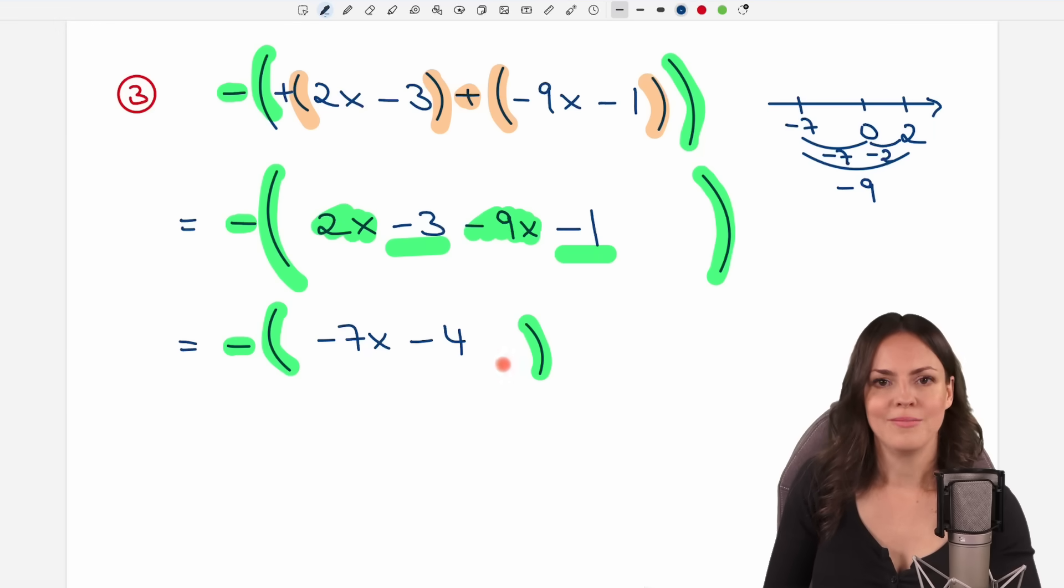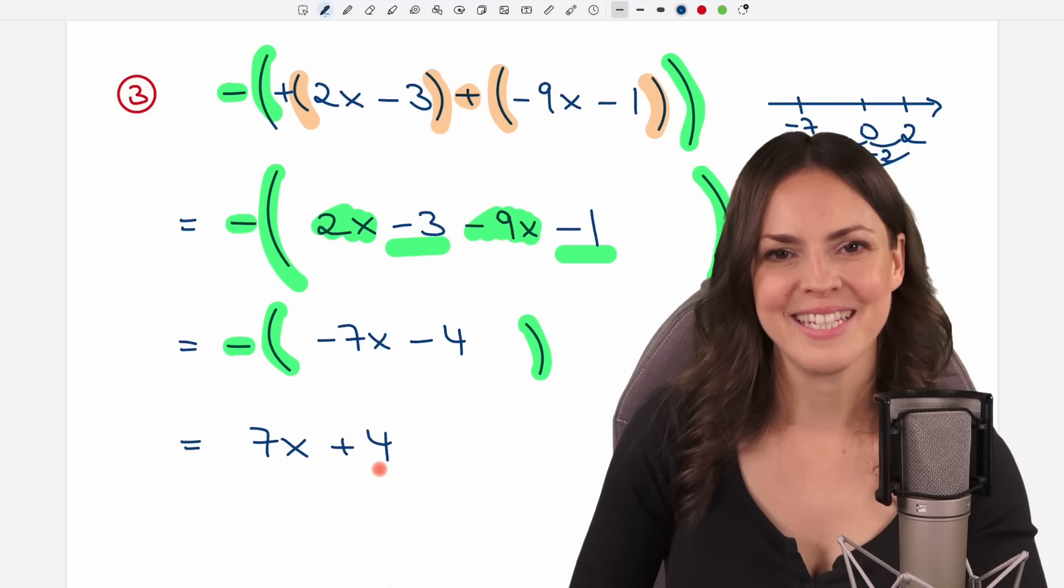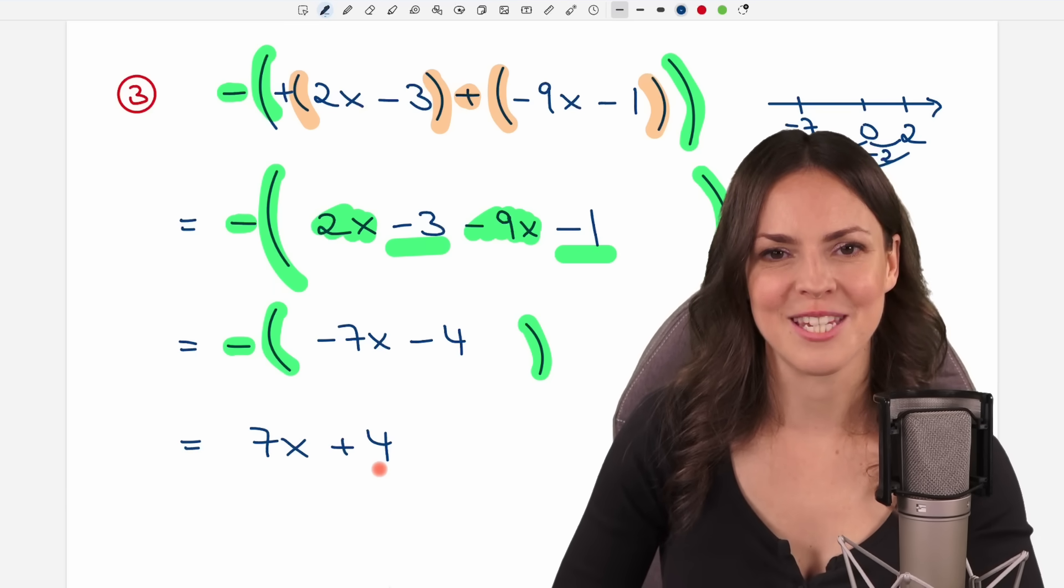Okay, now let's apply our minus here in front of the parentheses. We learned we have to change every sign inside. So instead of my negative 7x, I'm going to write down a 7x. And instead of my negative 4, I'm going to write down a plus 4. And that's it. I hope it helped you. If you have any questions, please let me know in the comments. I wish you a wonderful day and I hope to see you in one of my next videos.